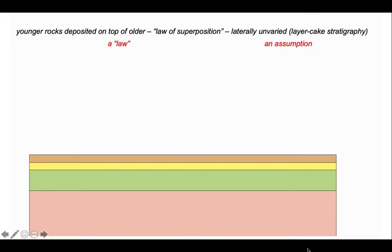So while the notion that younger rocks are deposited on top of older is a law, the idea that strata don't vary laterally is an assumption and a simplification for the purposes of our cartoons and actually breaks down in a number of cases. But it's going to keep us working today.